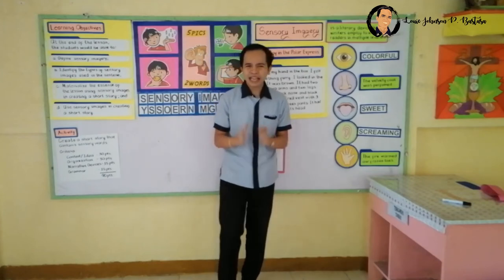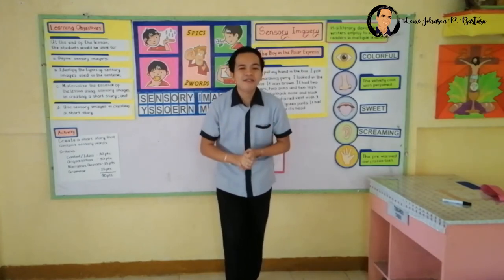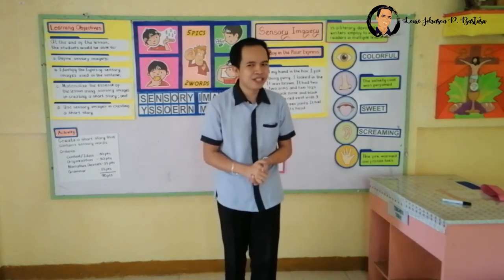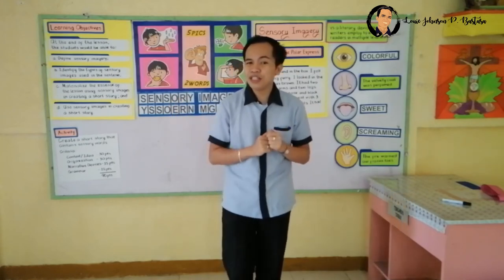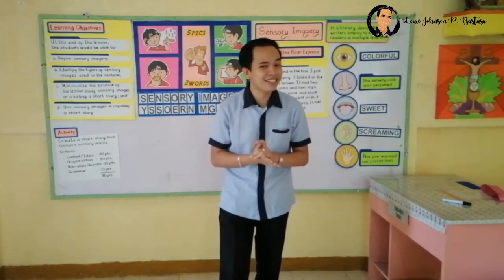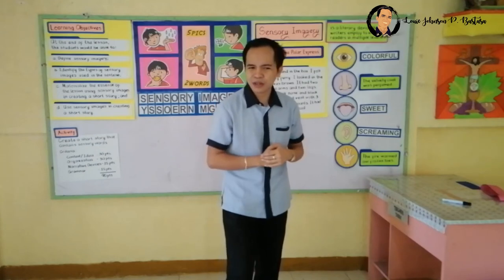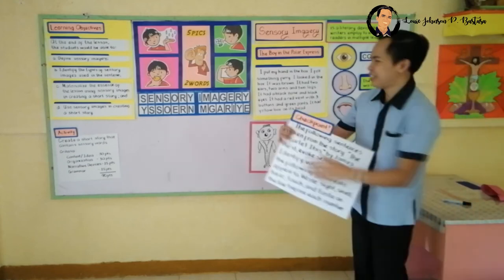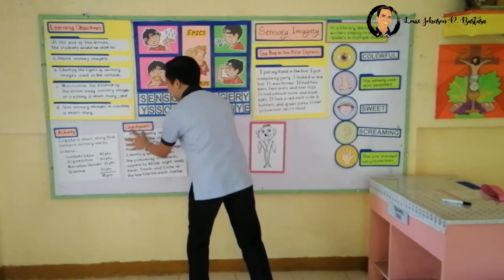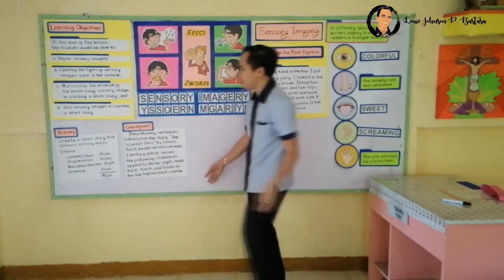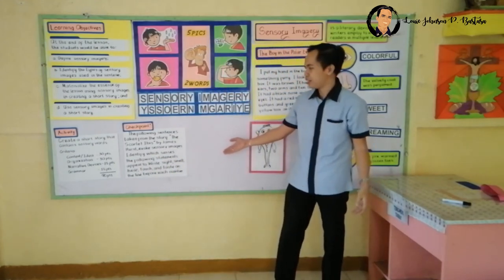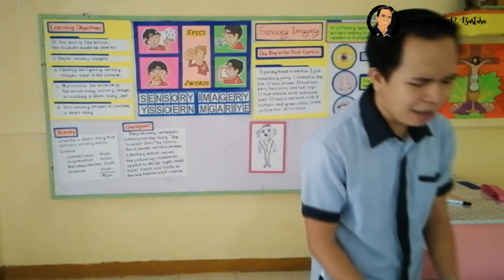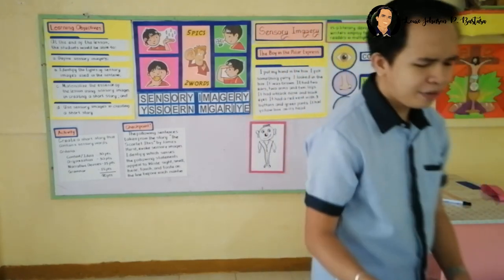Now let us have one last activity, because I am going to check whether you have fully grasped the entire discussion. Get one half sheet of paper, crosswise, and answer this question. Keep the energy, class — we're almost done! Read the instruction first and then answer these questions. Done? Pass your papers. Thank you.